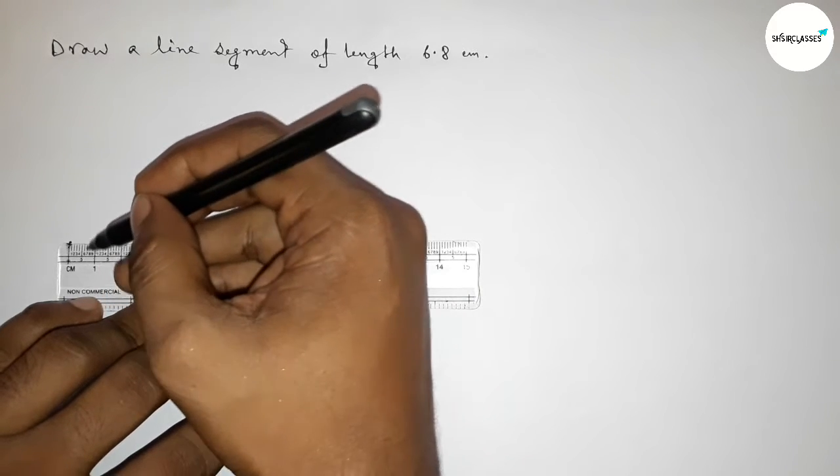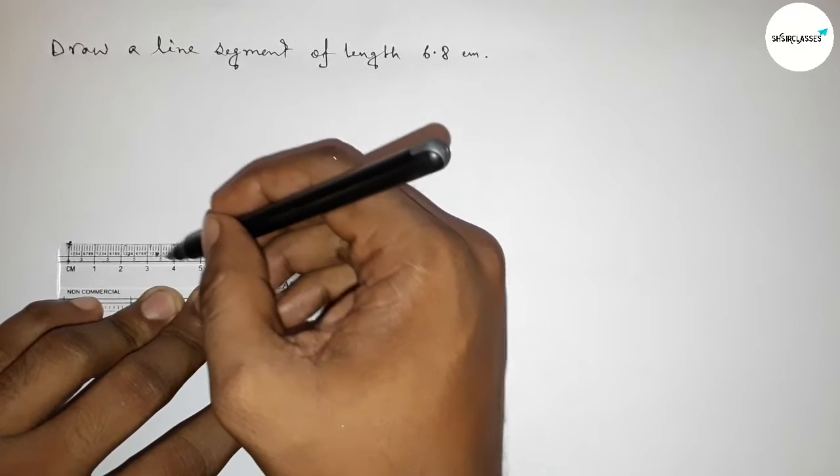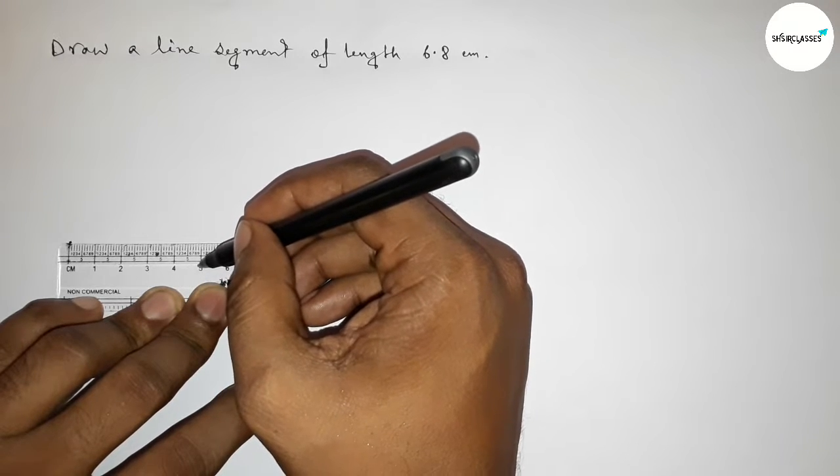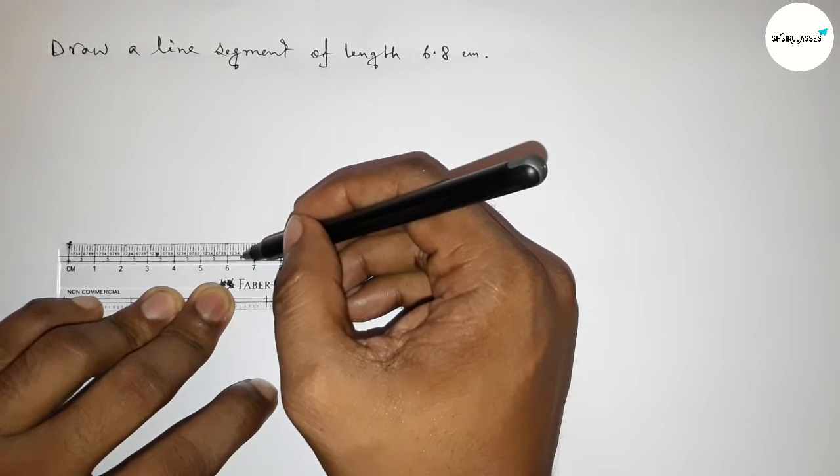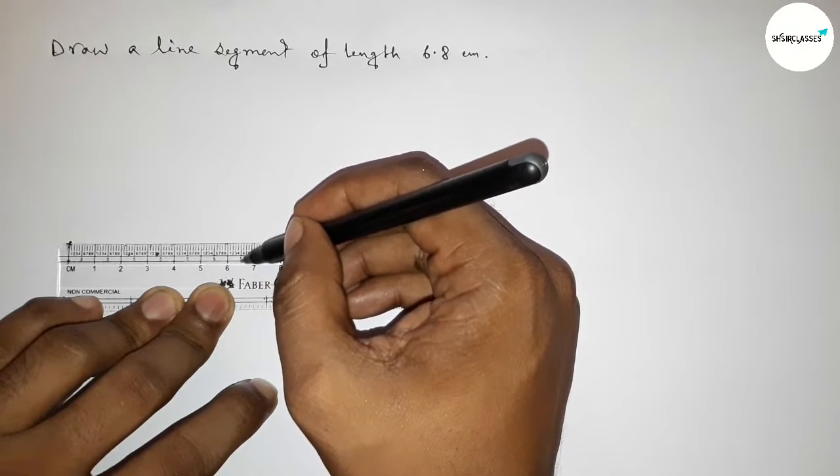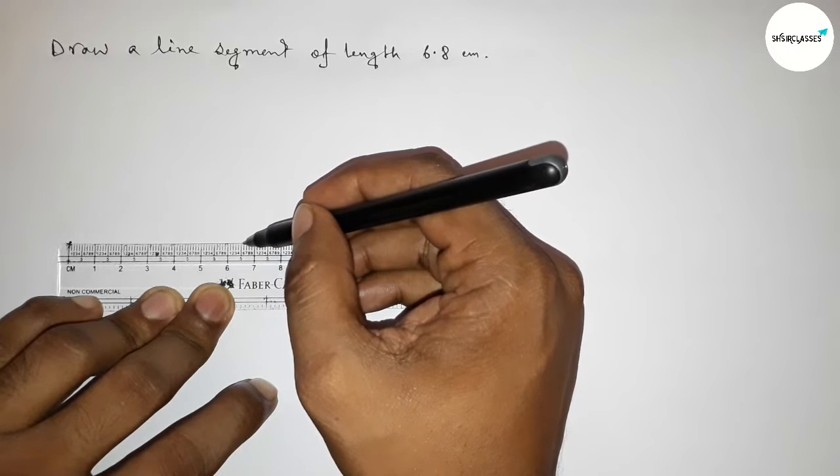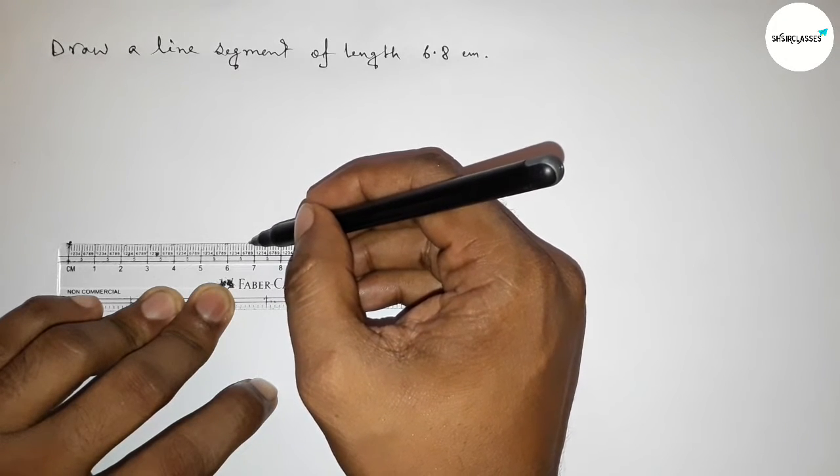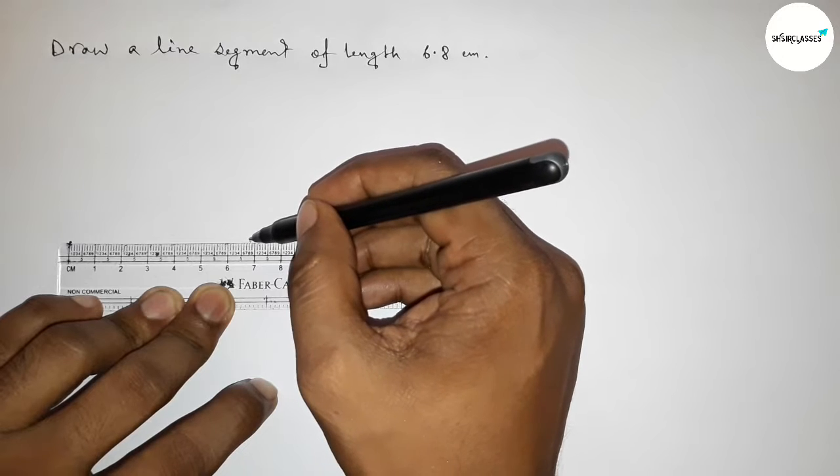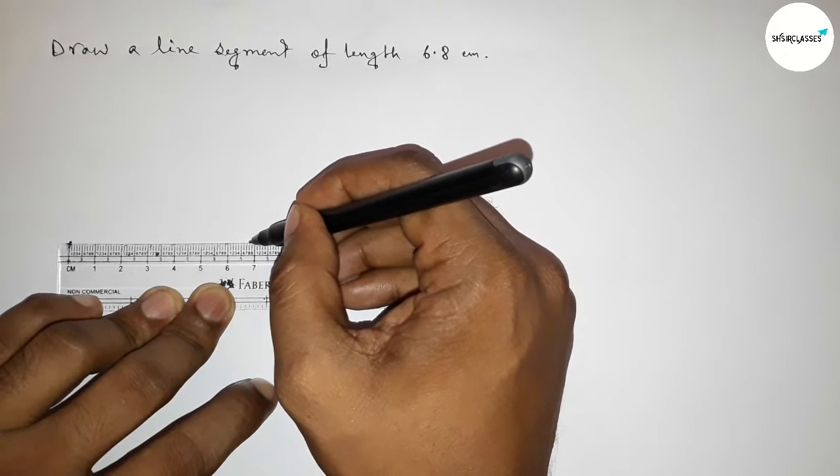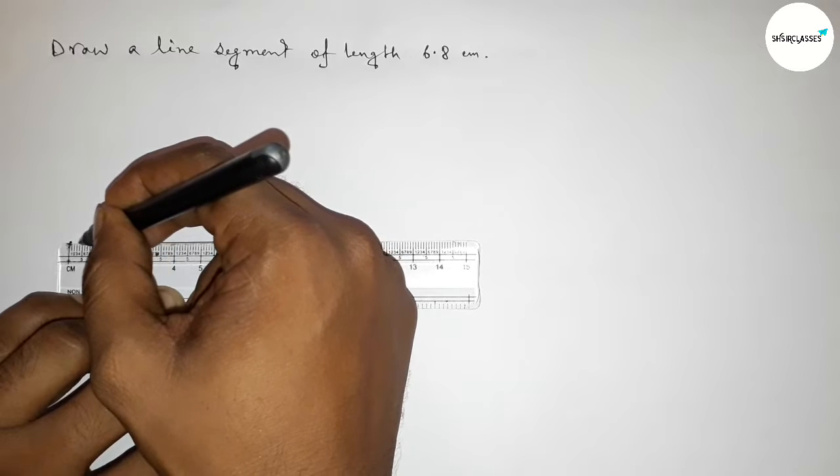Then counting: this is zero, one centimeter, two centimeters, three centimeters, four centimeters, five, six, and this is 6.5, 6.6, 6.7, 6.8. So this is 6.8 centimeters. First we have to mark here 6.8.